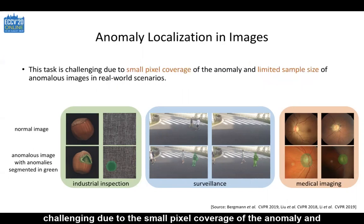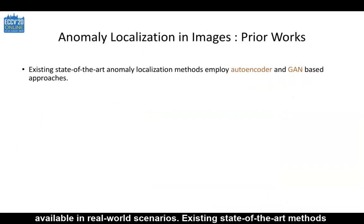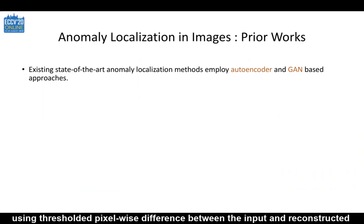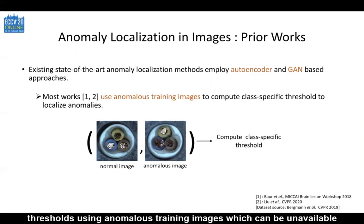This task is challenging due to the small pixel coverage of the anomaly and lack of suitable anomalous data, since images with anomalies are rarely available in real-world scenarios. Existing state-of-the-art methods tackle this challenge using autoencoders and GAN-based approaches using thresholded pixel-wise difference between the input and reconstructed image to localize anomalies. However, these methods compute class-specific thresholds using anomalous training images, which can be unavailable in real-world scenarios.